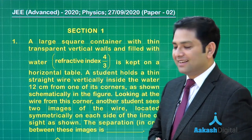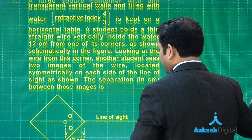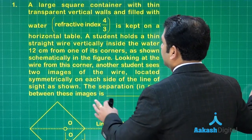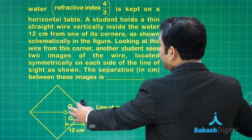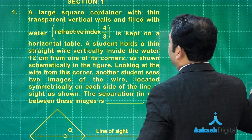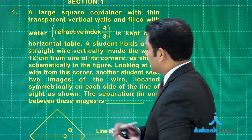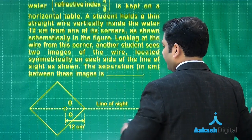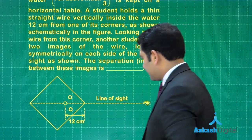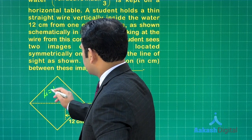A wonderful question has been made. This is a large square container with transparent vertical walls filled with water. The refractive index is given as 4/3, so μ equals 4/3.